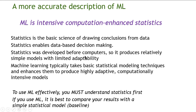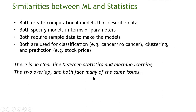Statistics was originally developed before computers, so it produces simple models with limited adaptability. Machine learning takes basic statistical modeling techniques and enhances them to produce adaptive and computationally intensive models. To use machine learning effectively, you must understand statistics first. It's also best to compare your results with a simple statistical model, because statistics faces many of the same issues.